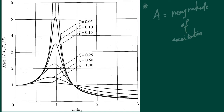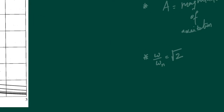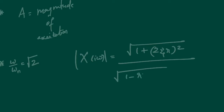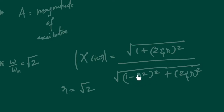If you observe the plot clearly, there are a few key points. This particular point is defined as where ω/ωn equals √2. The expression for |x(iω)| is: √(1 + (2ζr)²) divided by √((1 − r²)² + (2ζr)²). If r equals √2, let's see what happens to this expression.